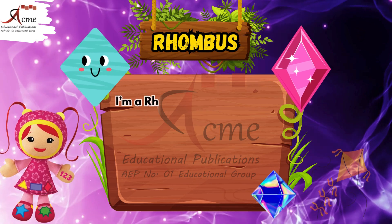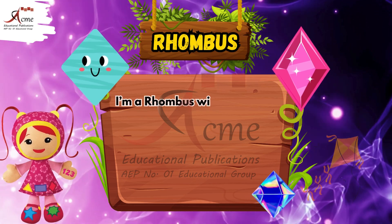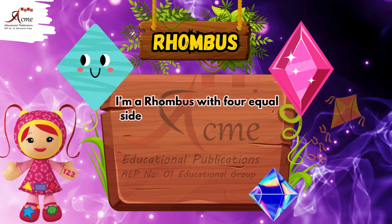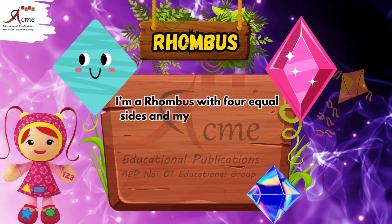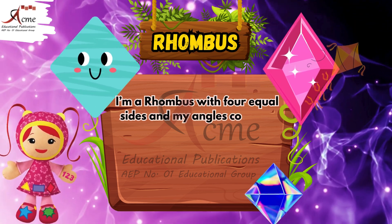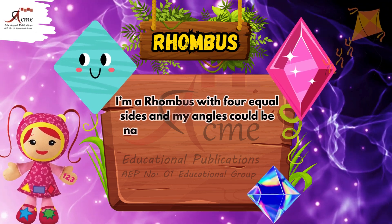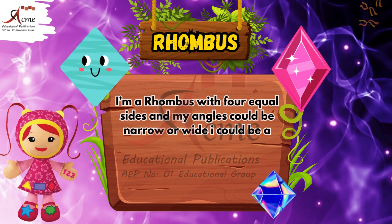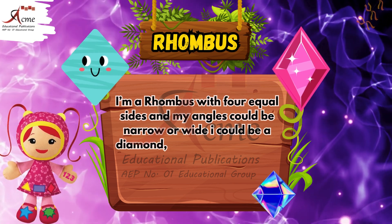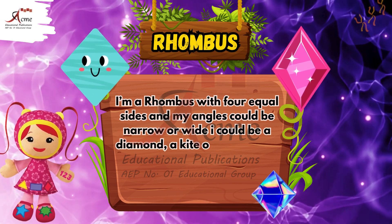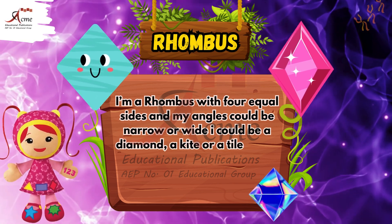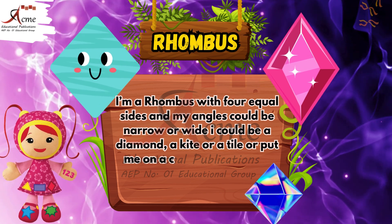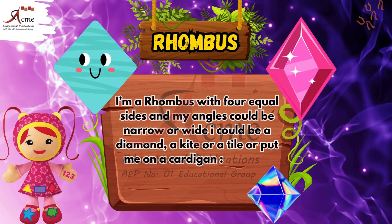Useful glance — a rhombus with four equal sides, and my angles could be narrow or wide. I could be a diamond, a kite or a tile, or put me on a cardigan, now I'm argyle.